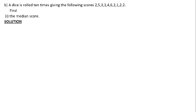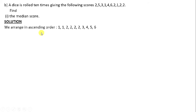What we are supposed to do is to first rearrange. We have to arrange in ascending order. Ascending order means arrange from the least score to the greatest score. How many times was 1 scored? One was scored twice. How many times was 2 scored? Two was scored four times. How many times was 3 scored? Three was once, four once, five once, six once.